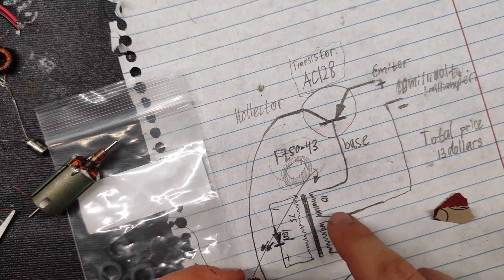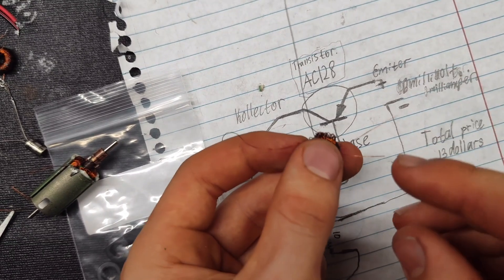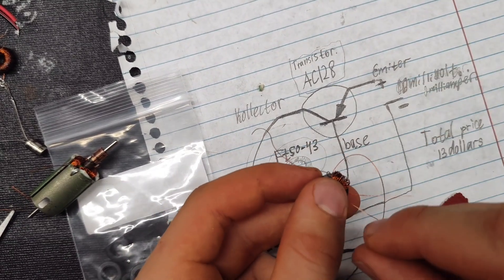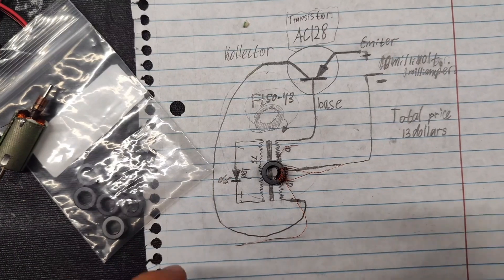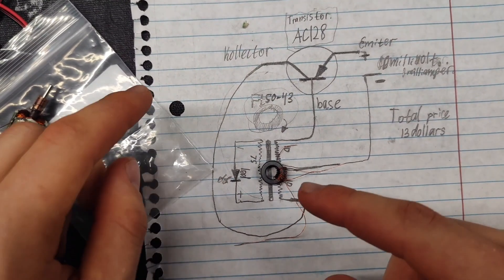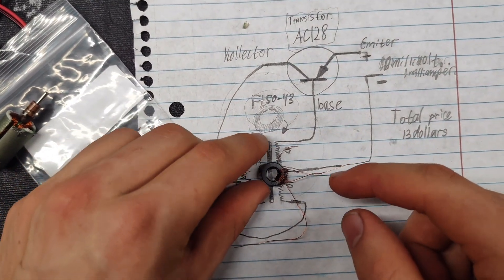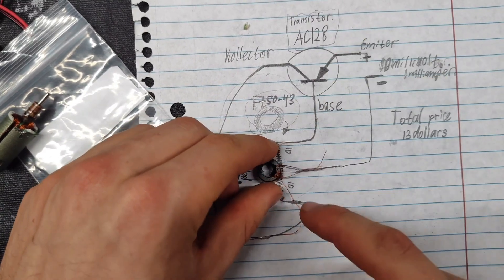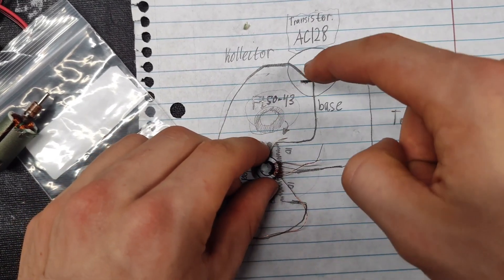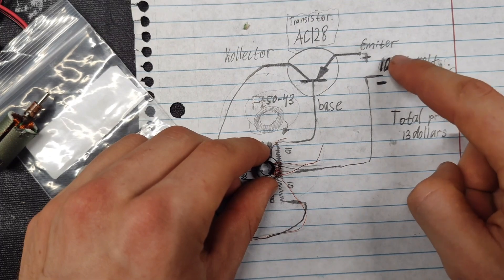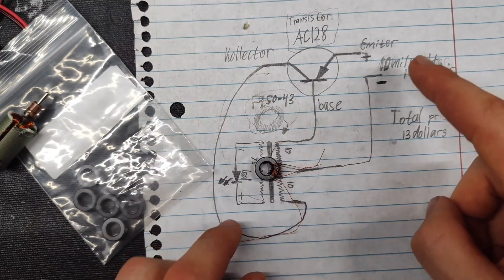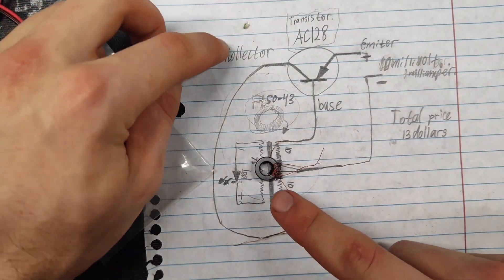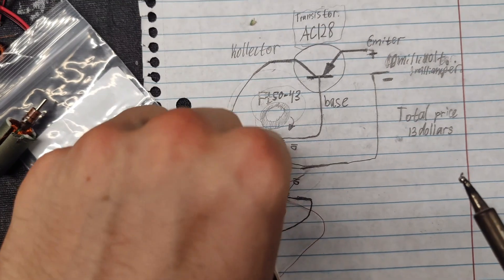Now I'll connect the wires. I connect this with this. You can see on this diagram how they're connected. This wire goes to the base, this is minus energy, this goes to the collector. Now I'm soldering the wires.